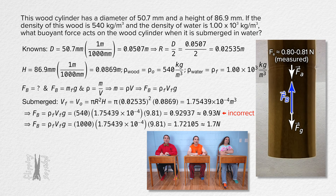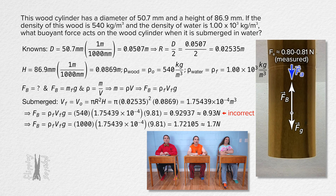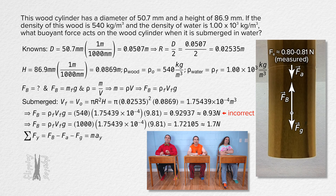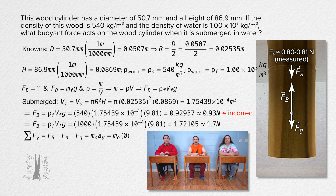The buoyant force is up, the force of gravity is down, and the force applied by the force sensor is also down. That means the net force in the y direction equals buoyant force minus force applied minus force of gravity. And the net force also equals the mass of the object times acceleration in the y direction. The acceleration of the object in the y direction is zero, so that whole equation equals zero. We already calculated the buoyant force: it's 1.72105 Newtons.